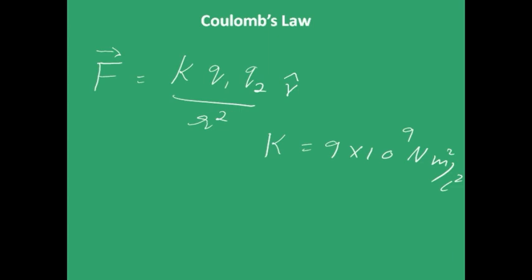This is also written in a detailed form as 1 by 4 pi epsilon naught into Q1 Q2 by R square R cap. This means that the direction of the force is along the line joining the two charges. And the K, the proportionality constant, is nothing but 1 by 4 pi epsilon naught.